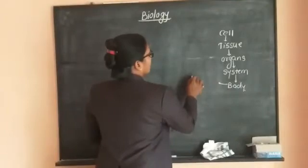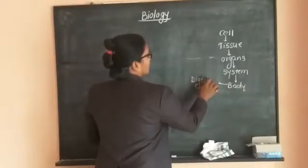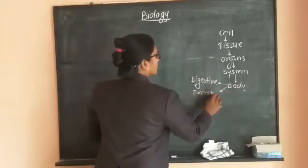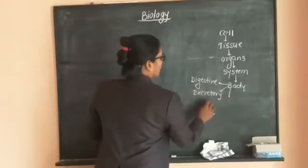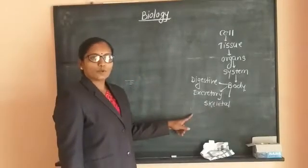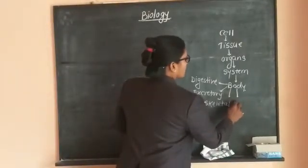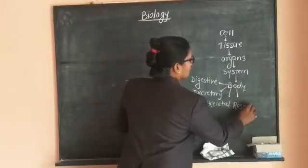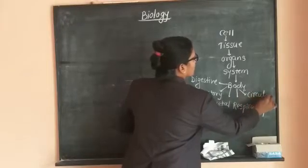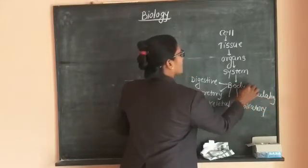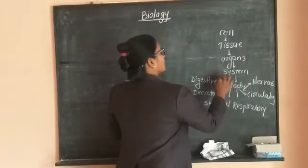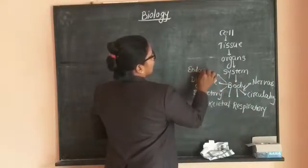Now in 11th standard, we studied about human nutrition, that is the digestive system of the human being. We also studied about the excretory system. Then we also studied about the skeletal system of the human body. Along with this, the human body includes the respiratory system, the circulatory system, the nervous system, and also the endocrine system.